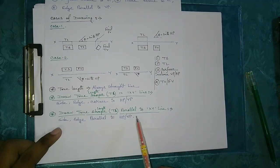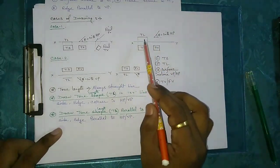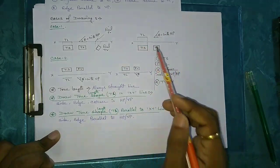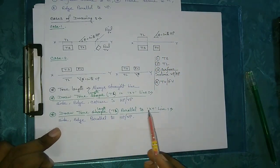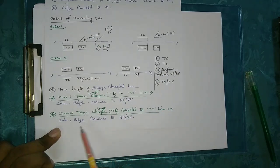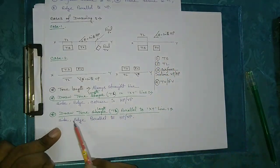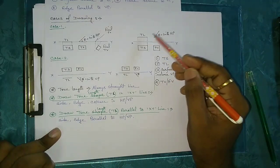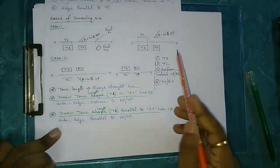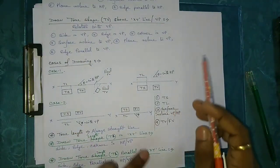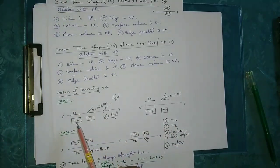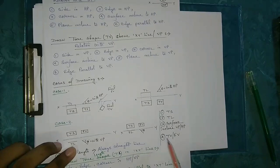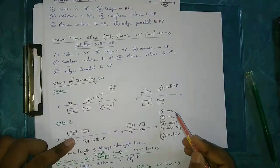Next, we draw the true length parallel to the XY line. If a certain distance is given, we use it; if no distance is given, we set a default. The condition for drawing true length above the XY line and parallel to it includes: side parallel to VP, edge parallel to VP. This is the case for the true shape in the XY line and parallel to it — covering the surface inclined condition and front view to VP.